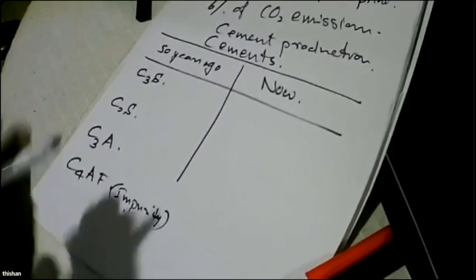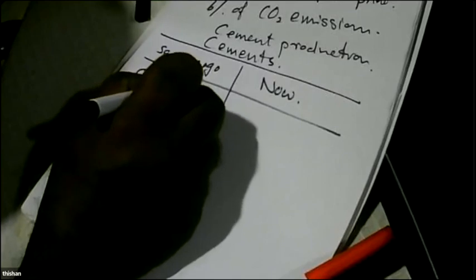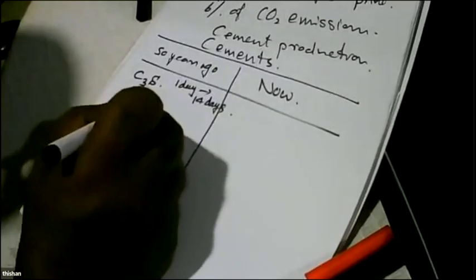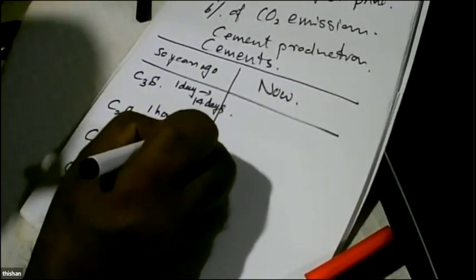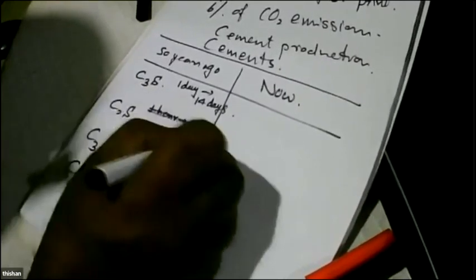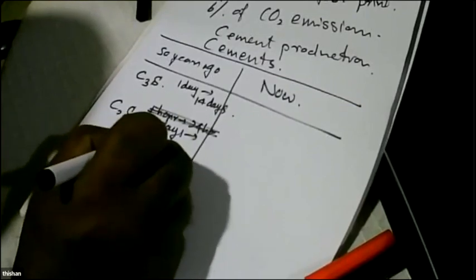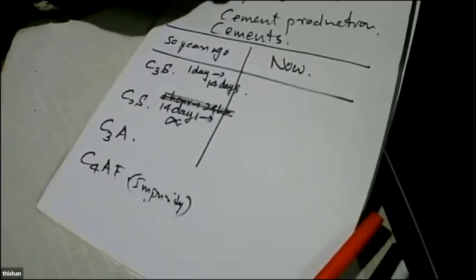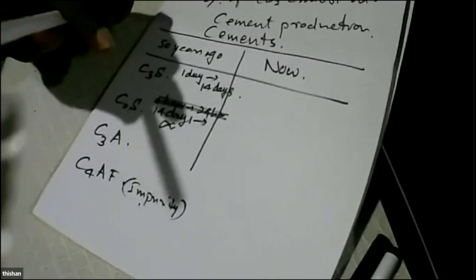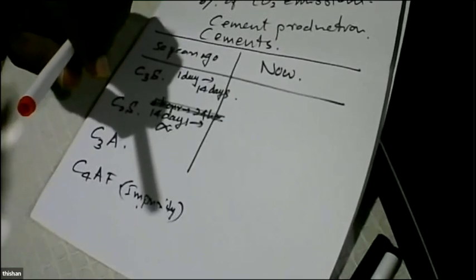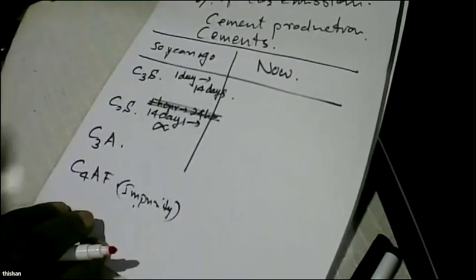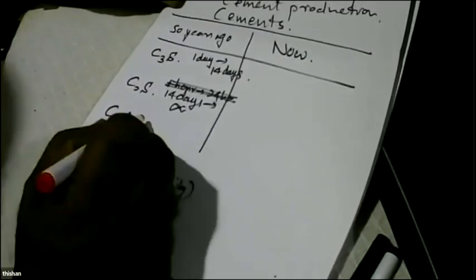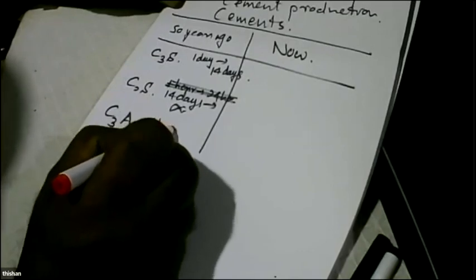C₃S is responsible for strength from 1 to 14 days. C₂S is responsible from 14 days to infinity — the reaction continues indefinitely. That is why old cement cubes kept for a few years can reach 60 or 70 MPa — because of the plentiful dicalcium silicate. C₃A is active from 1 hour up to 24 hours, and C₄AF is an impurity. Fifty years ago, cement had about 50% C₃S, 25% C₂S, and 8 to 10% C₃A.